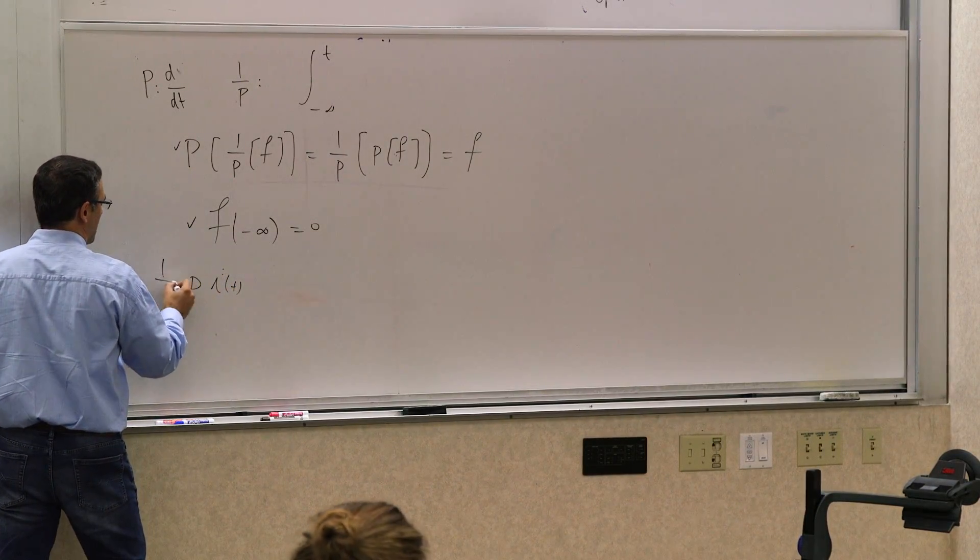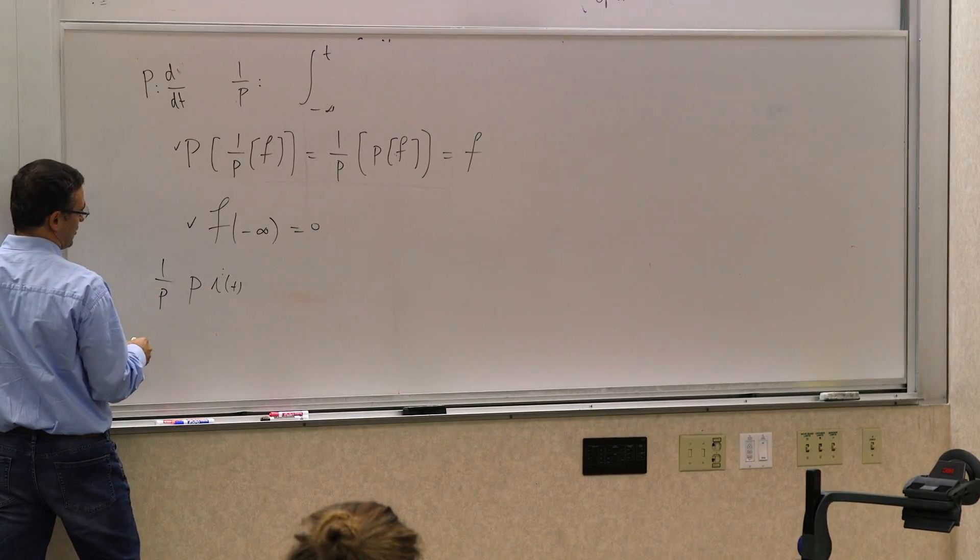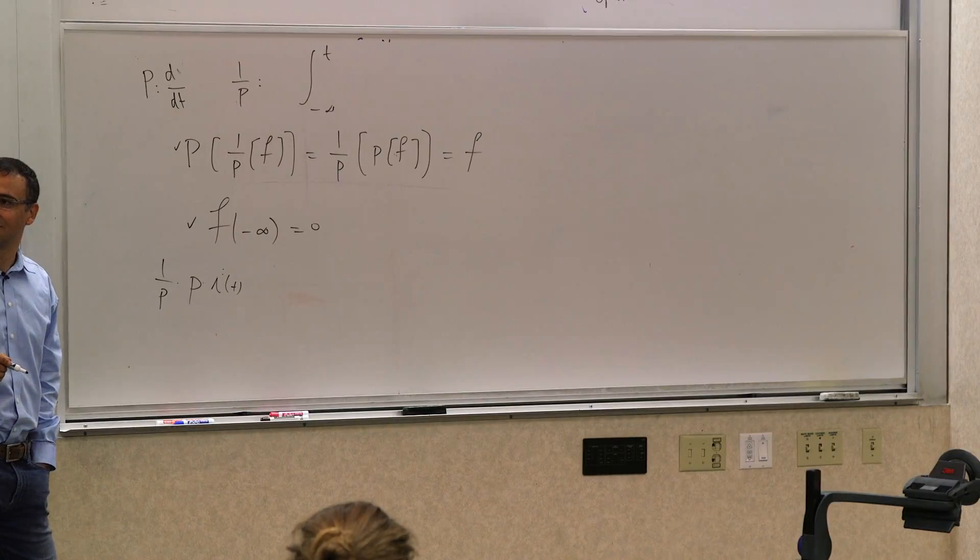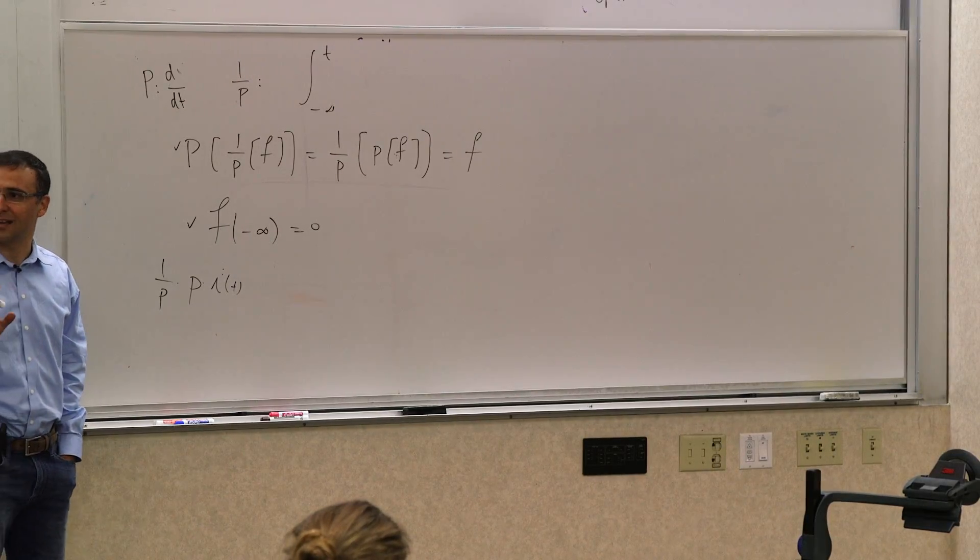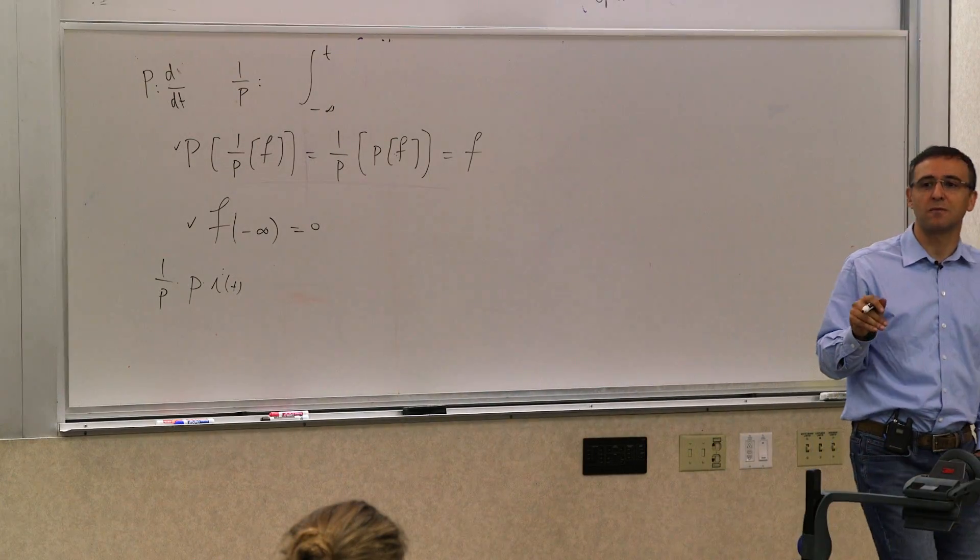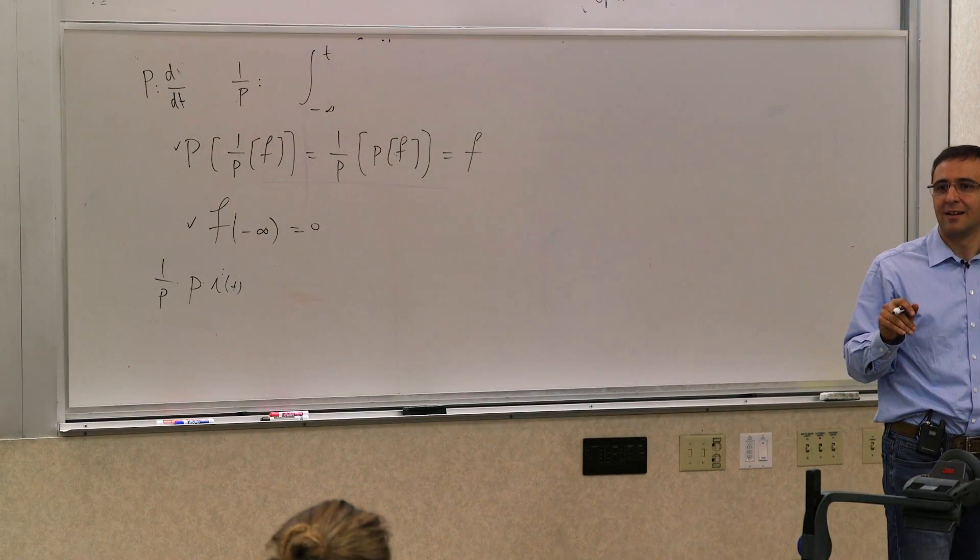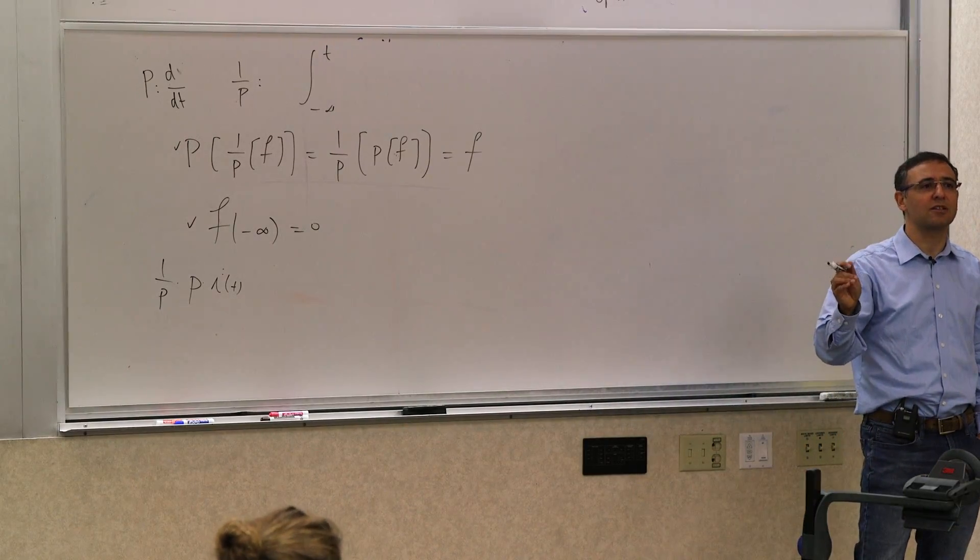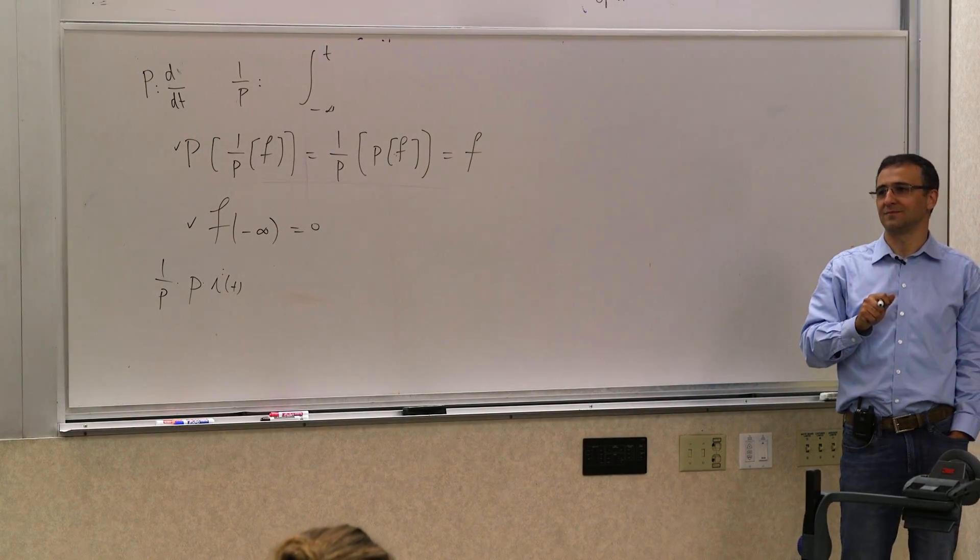because if I have p operating on i, and then I have 1 over p operating on that, I'm starting to think about this as a product. You haven't proven that yet. You haven't really shown it under all cases, all circumstances. But that's the direction we are going.